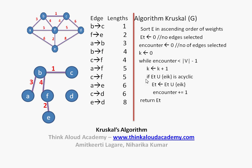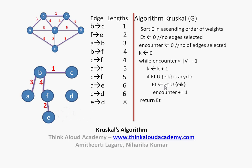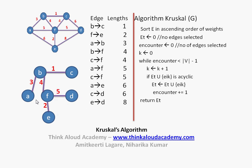Between BF and CF we choose one — say BF. Then CF comes next but would form a loop, so according to the if-statement we only add an edge if it does not form a loop, and we ignore CF. The next edges are AF or FD; choosing AF would form a loop, so we choose FD instead. This algorithm ensures that we get the minimum cost spanning tree.